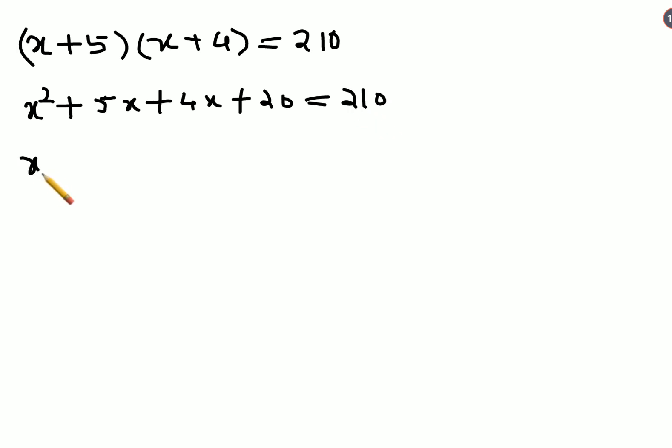So eventually this becomes 5x plus 4x, which gets you 9x plus 20 minus 210 equals to 0. So we have x² plus 9x minus 190 equals to 0.